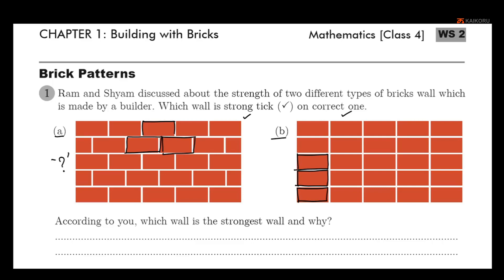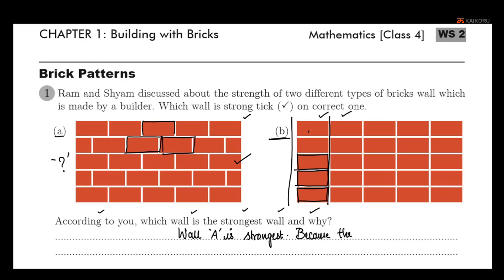So, this is the first figure. A is strong. A is strong because the bricks are not arranged one above the other exactly. That is the reason — the bricks are not arranged one above the other exactly.